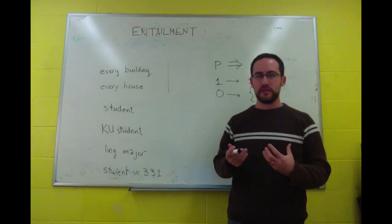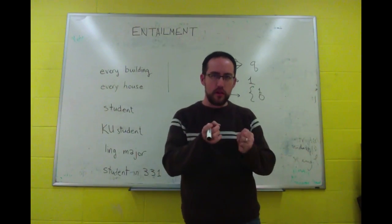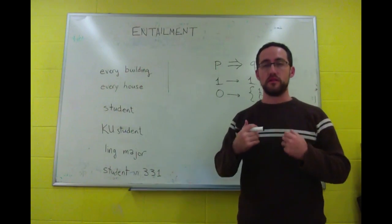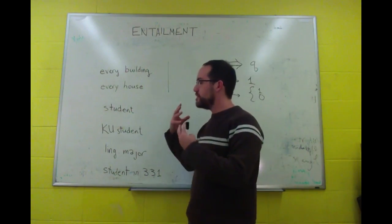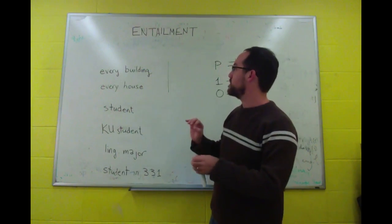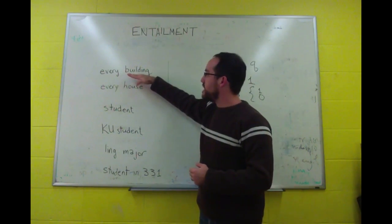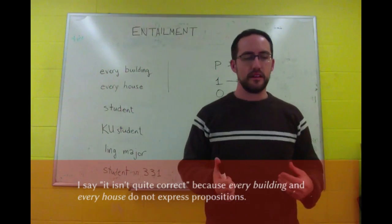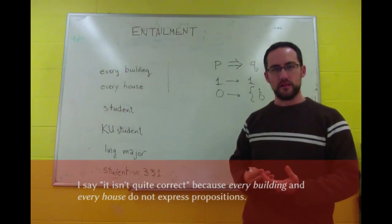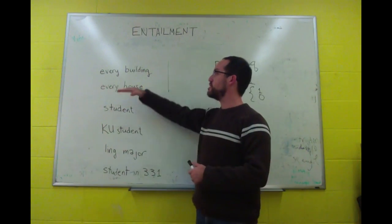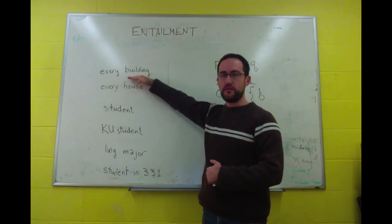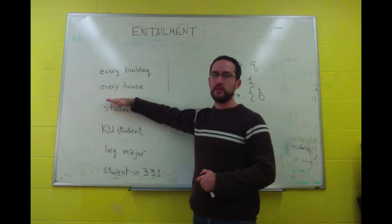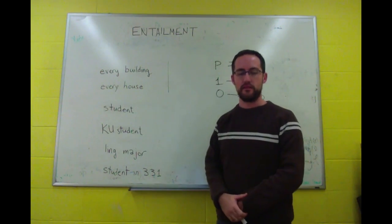Now, entailment is really something that we can pull out of a sentence compositionally by looking at the different parts of a sentence. We can say that every building entails every house. In the sense that, in a lot of contexts, propositions with the phrase every building will entail the exact same proposition, except with every house instead of every building.